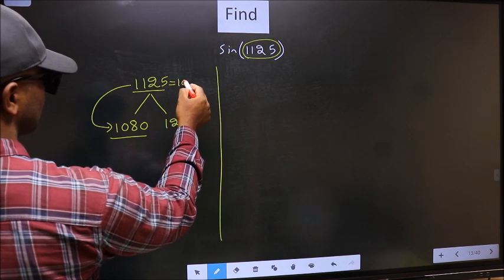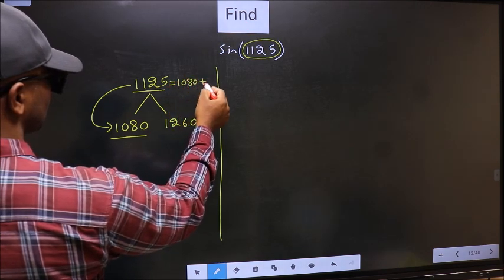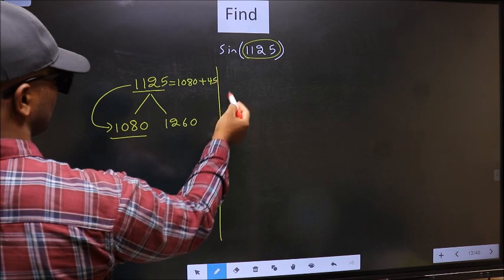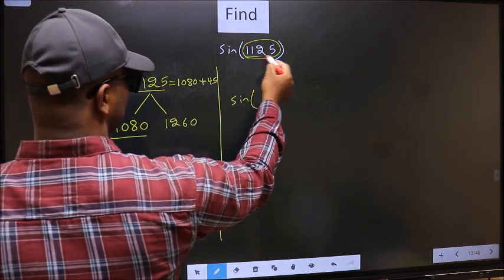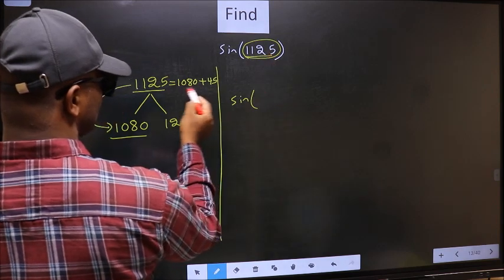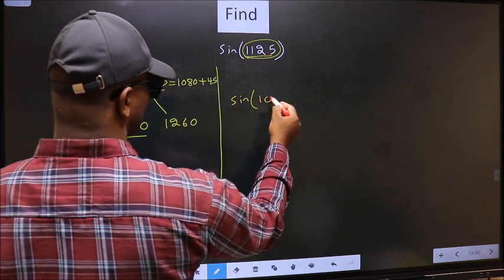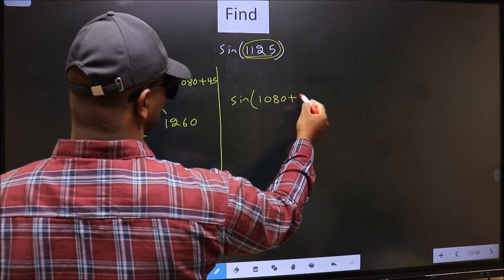So this will become: in place of 1125, we should write 1080 + 45.